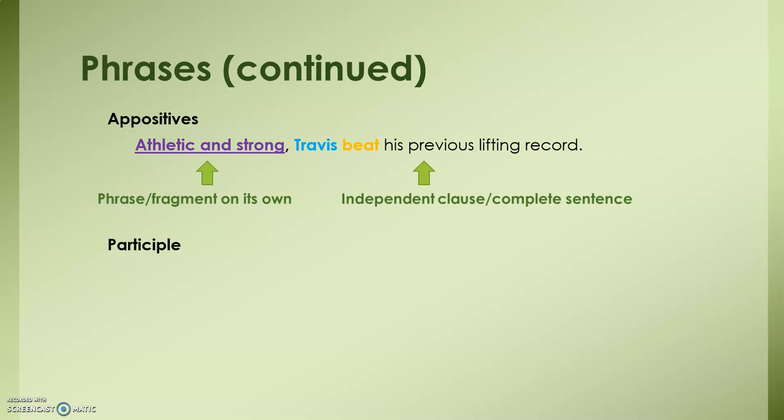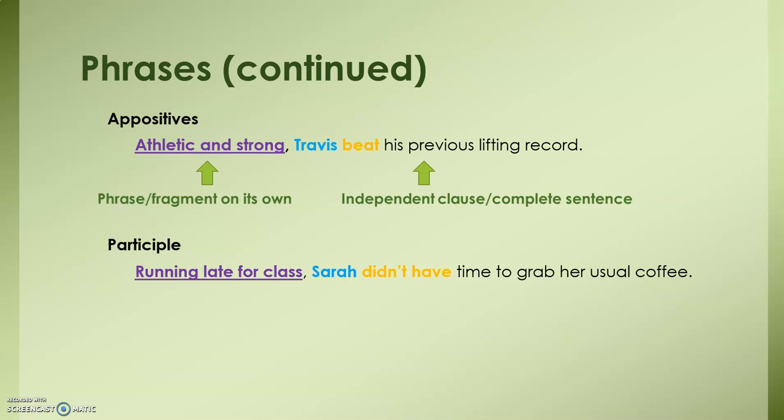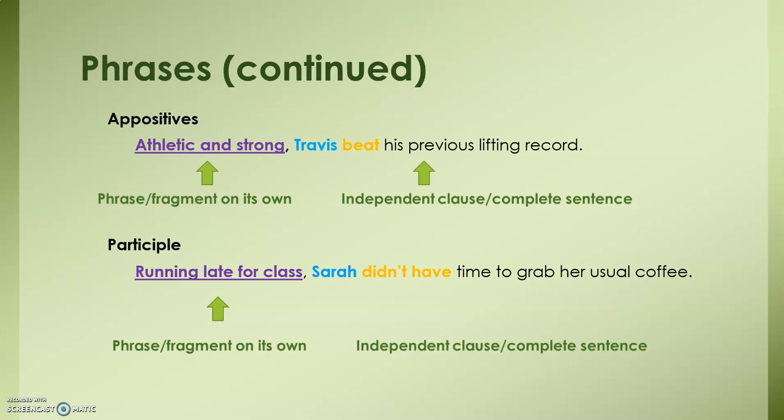Here we have an example of a participle phrase. A little hint: usually when you have a sentence starting with an -ing word, it usually indicates that you have an introductory phrase. 'Running late for class, [comma] Sarah didn't have time to grab her usual coffee.' Again, on the left, we have a phrase that would not be able to stand on its own. On the right, we have our subject, Sarah, our verb, didn't have, and a complete thought — which is again why we split it with a comma.